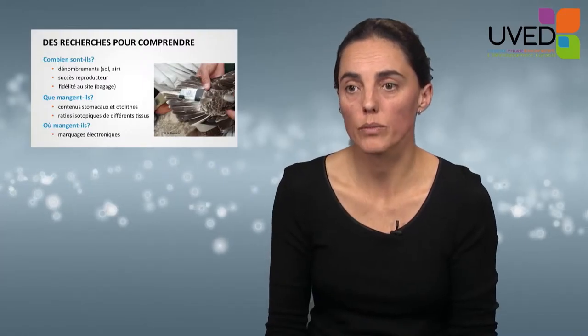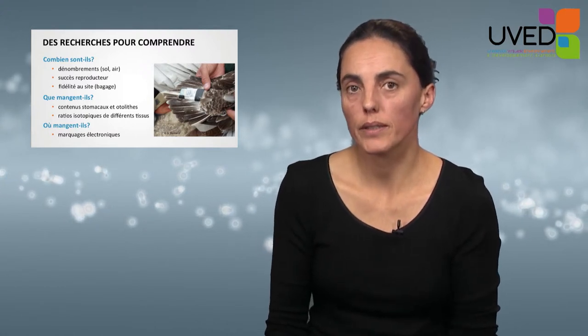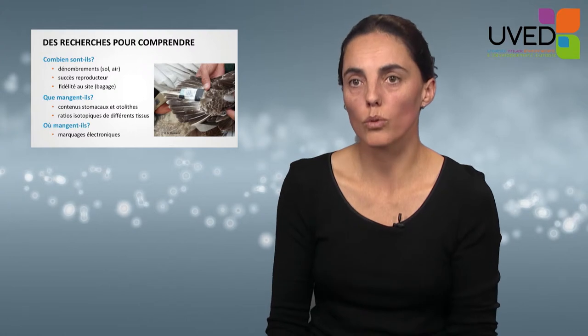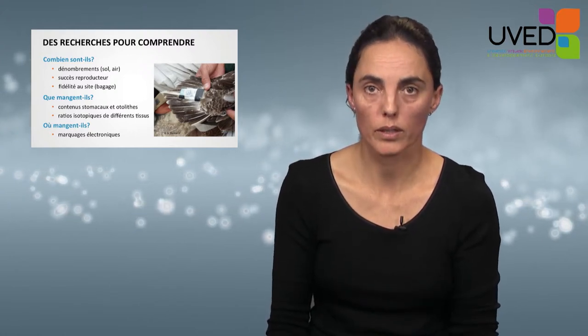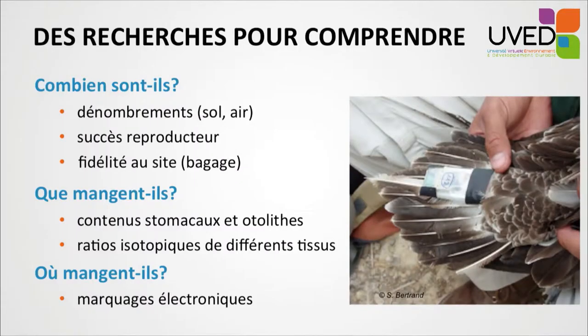Studies are necessary to understand the contribution of each factor. Research has been organized around three types of data. We need to know exactly the number of seabirds — either counted from the ground or from the air with airplanes or UAVs. Dynamic models are used to understand what happens where we have no data. We also need to gather information on reproductive success, and we can band the birds to understand nesting site loyalty and lifespan.